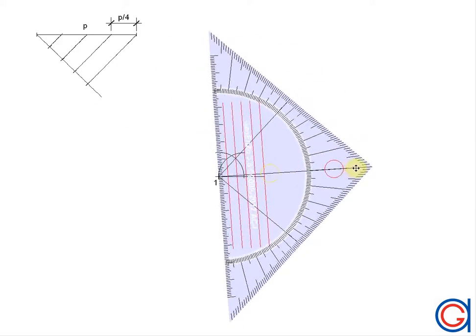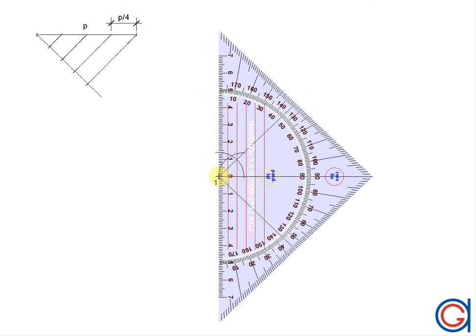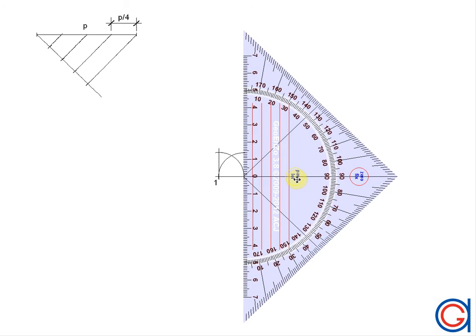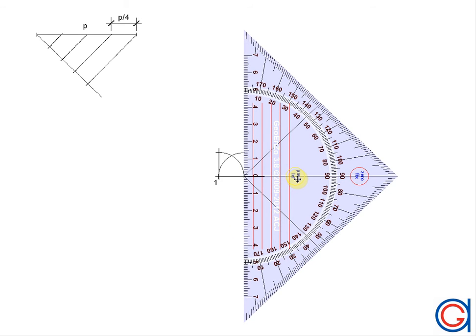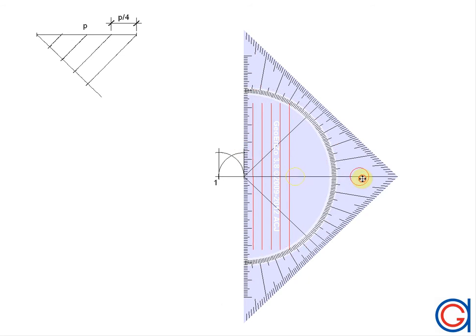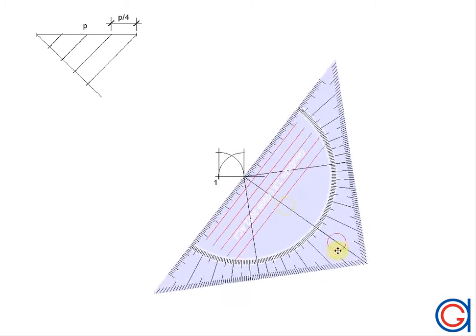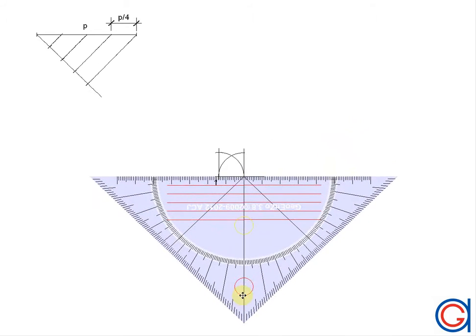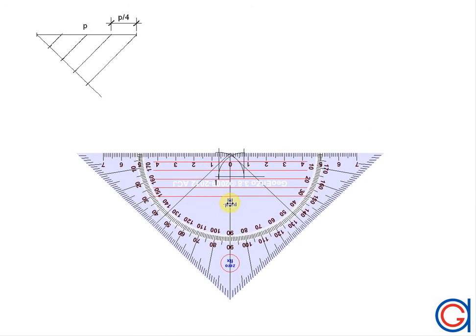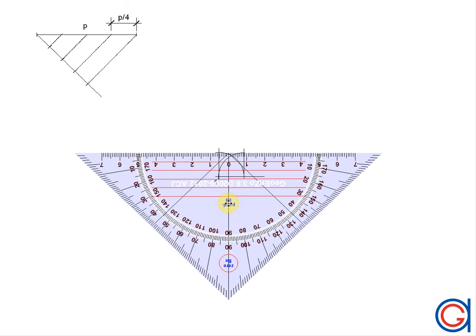Now we are going to draw two perpendicular vertical lines from the first two centers, until they cut our previously drawn arcs, which will be our second two centers of our spiral. Now we join these centers to form a square, and we will call these points 1, 2, 3, and 4, as shown here in the video.